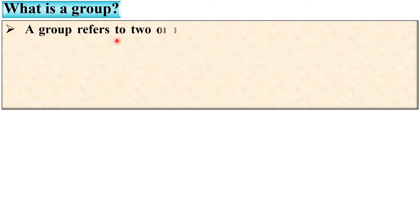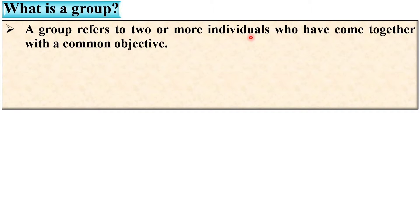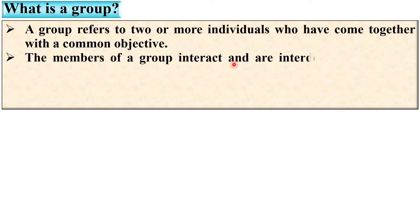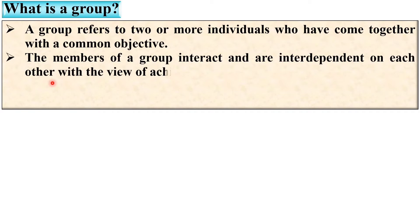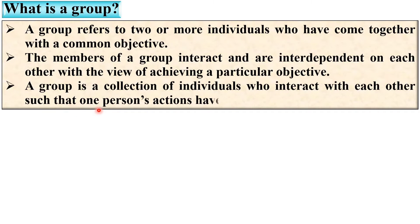First of all, try to understand what is a group. A group refers to two or more individuals who have come together with a common objective. The members of a group interact and are interdependent on each other with the view of achieving a particular objective. A group is a collection of individuals who interact with each other such that one person's actions have an impact on the others.